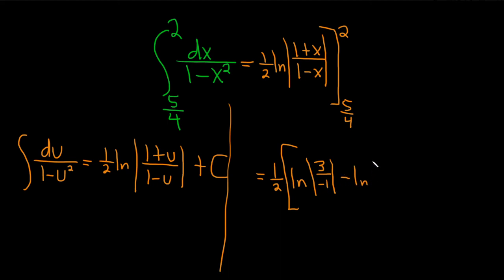Minus the natural log of... Plugging in 5 fourths, think of the 1's as 4 fourths. So it's 4 fourths plus 5 fourths, which is 9 fourths. 4 fourths minus 5 fourths, which is negative 1 fourths. There we go.